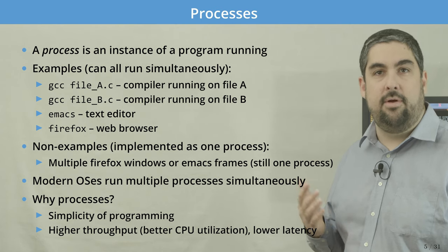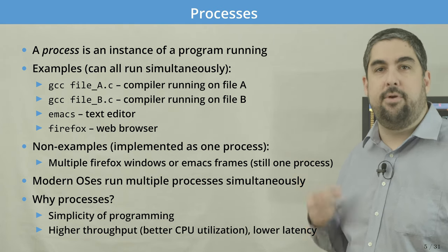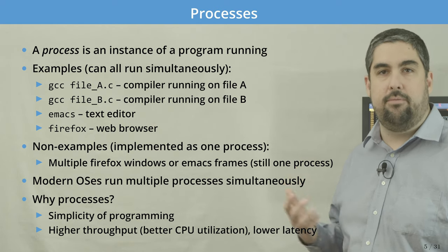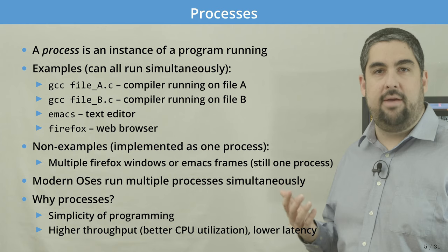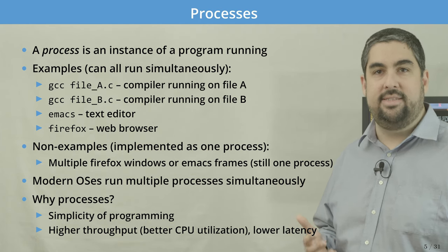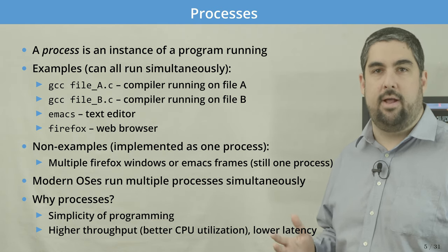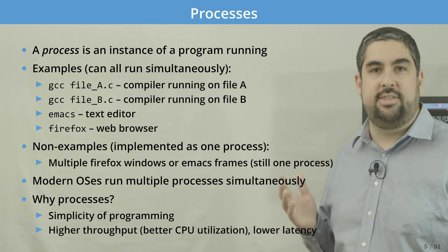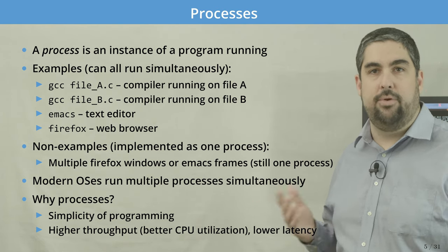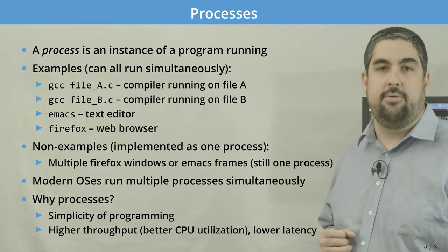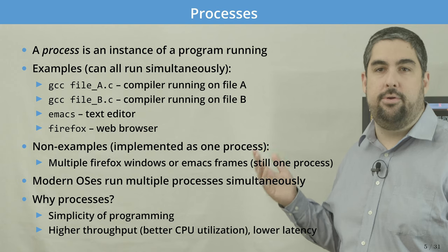In most modern operating systems we can have many processes running at the same time. The process abstraction ensures that for any given instance, all of the data and state of the running program is unique to that instance. When GCC is compiling file A, it only has to worry about the data from file A and gets to use all global variables and state defined locally to that instance. When a new instance is run, all of that state will be reset, making a much simpler model for the programmer.